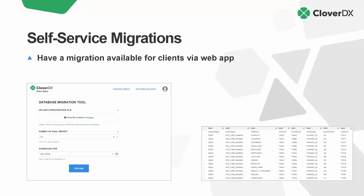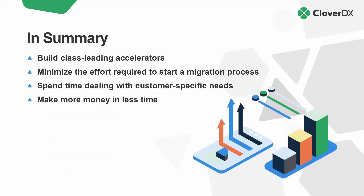A lot of our clients have found quite a lot of success and found themselves being leaders in the space compared to their competition when they have something as powerful as Clover on their side. Quick summary: we are most interested in building reusable accelerators — let's not build the same pipeline 100 times. Do it once, iterate, and abstract that concept to tackle bigger problems. Minimize the effort required to start a migration process so we can spend more time dealing with customer-specific needs and making sure all their requirements are met. At the end of the day, you're going to be able to make much more money in much less time.